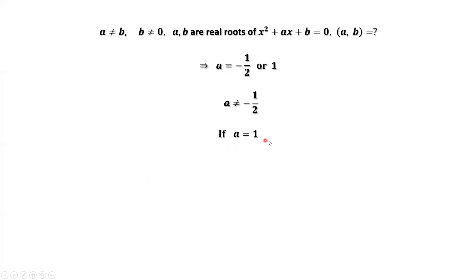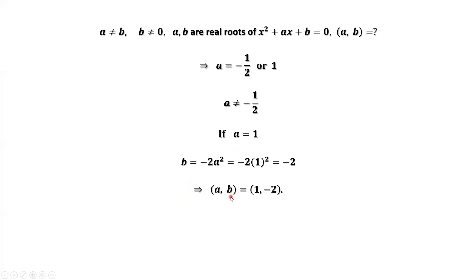Now checking a equals 1: since b equals negative 2a squared, replacing a by 1 gives b equals negative 2. Since b does not equal a, this is valid. Therefore, a, b equals 1, negative 2. That's all — thanks for watching and see you next time.